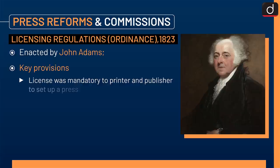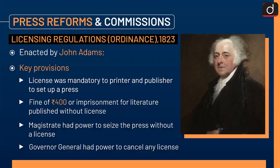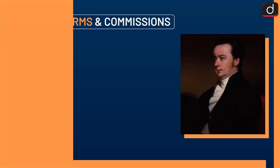Next is the Licensing Regulations Ordinance 1823, enacted by John Adams. Key provisions included: a license was mandatory for any printer and publisher to set up a press; a fine of Rs. 400 or imprisonment for literature published without a license; the magistrate had power to seize any unlicensed press; and the Governor-General had power to cancel any license.